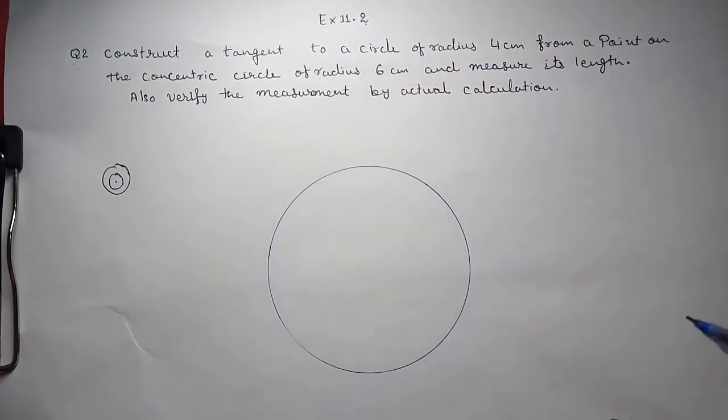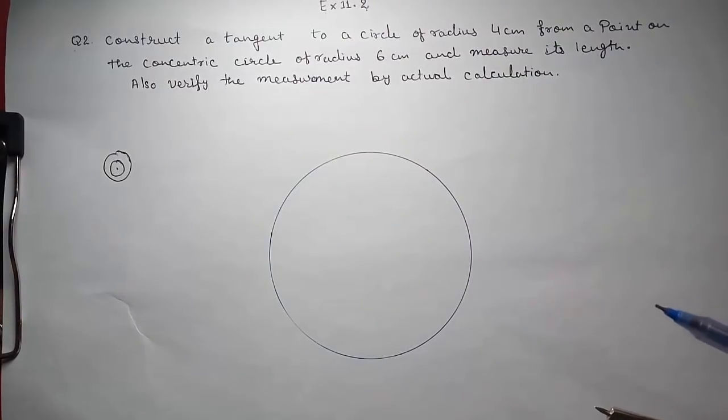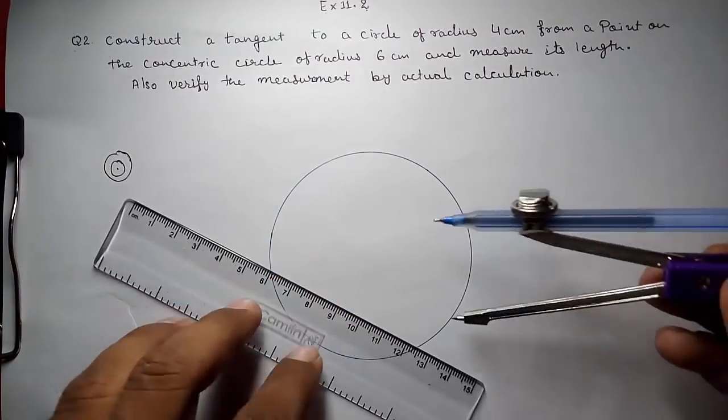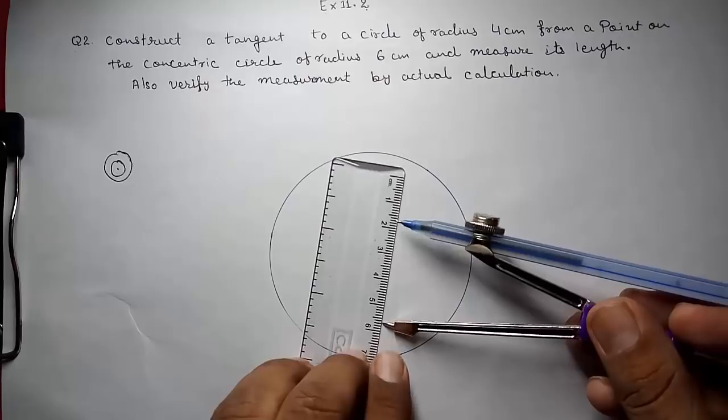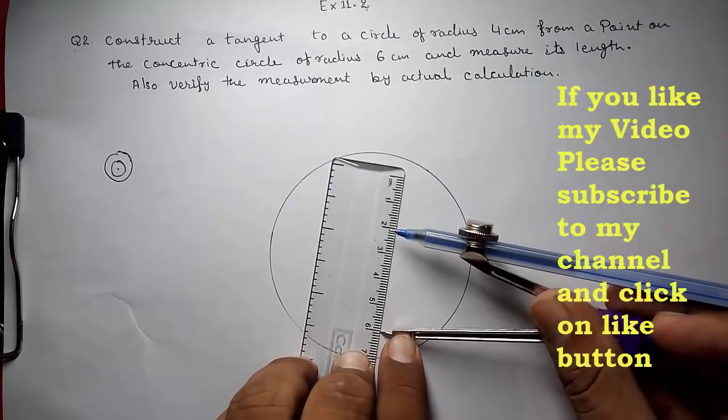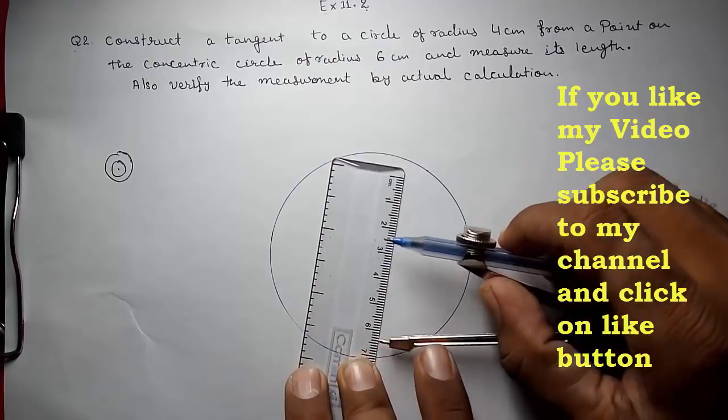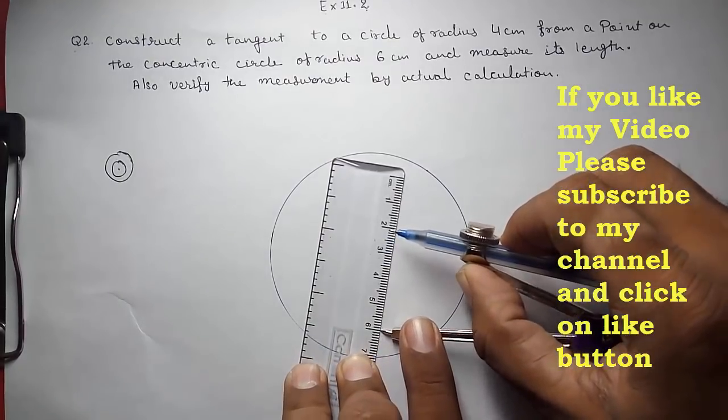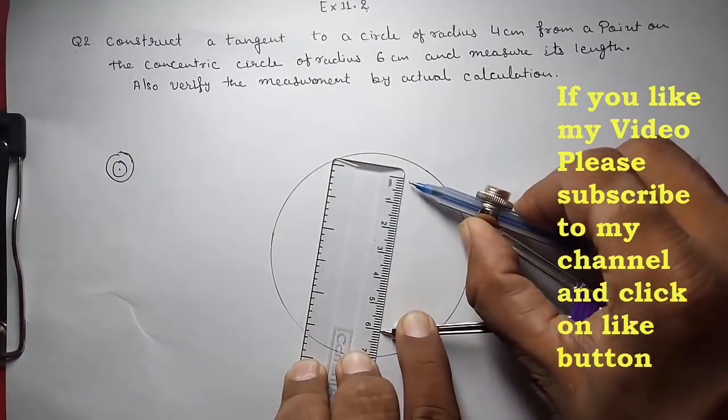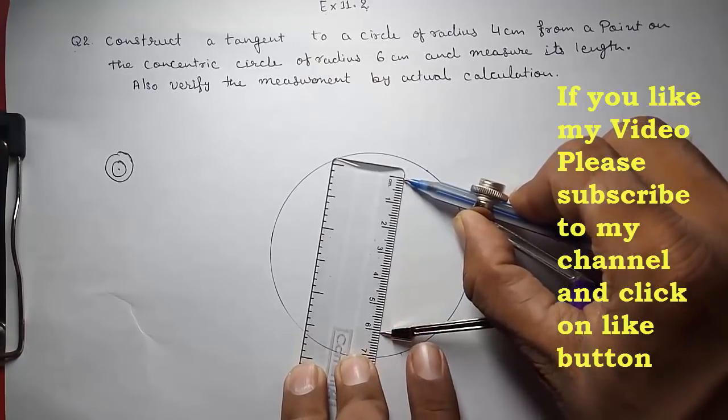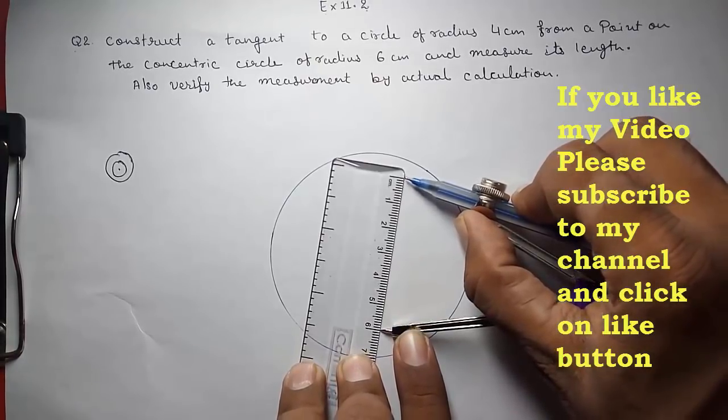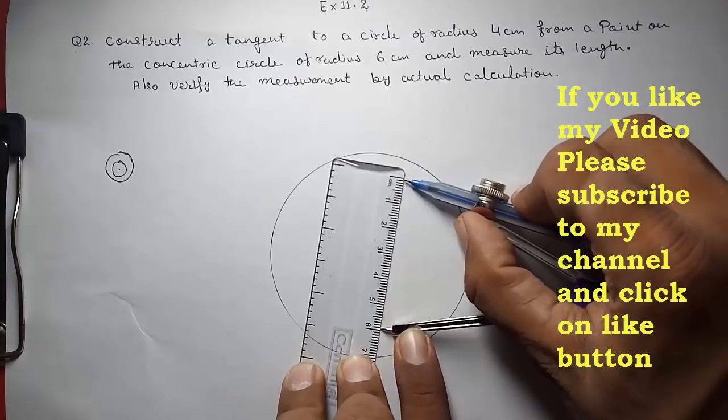Now they told you to draw another circle with radius 6 cm. So again, now I am going to measure radius 6 cm with the same center point. From that same center point I have to draw another circle with radius 6 cm.